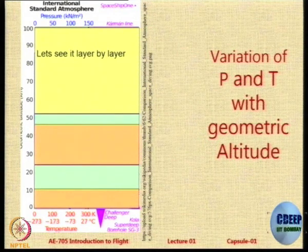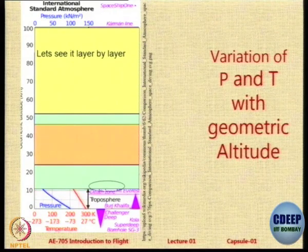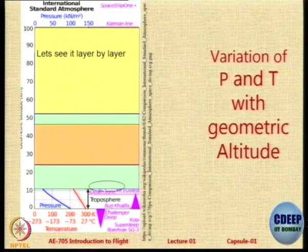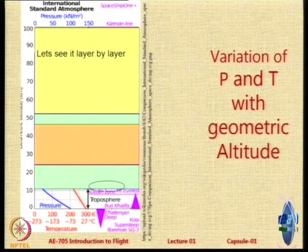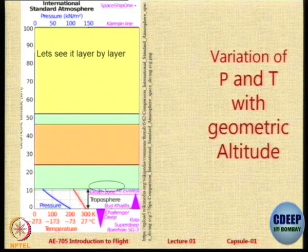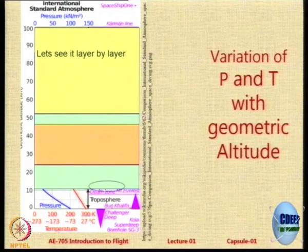I have just hidden the layers and I want you to go layer by layer. First we look at the troposphere, which is the bottom most portion. We notice the red line shows that the pressure is reducing from around 288, it reduces linearly up to a value of about 212 Kelvin. The pressure does not change linearly but it reduces. It is a non-linear variation because dP has got that rho and rho is changing with altitude.